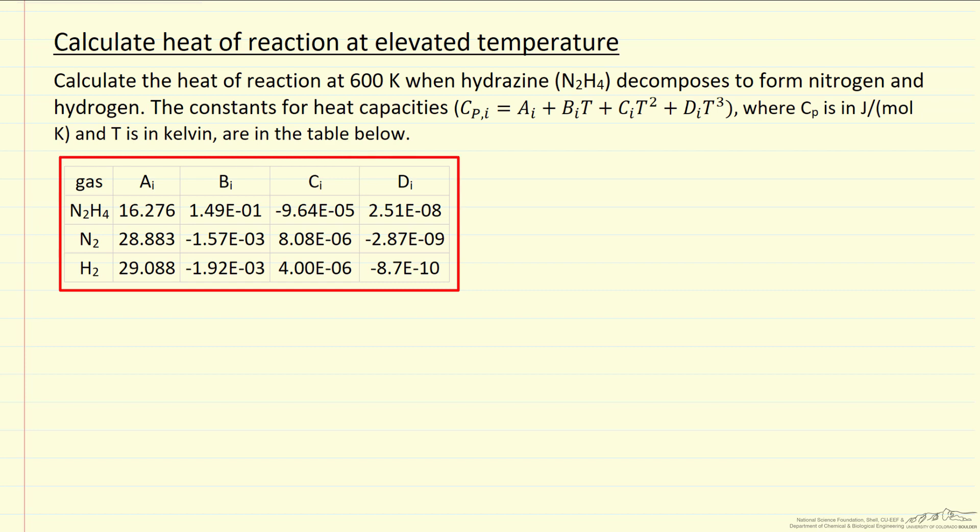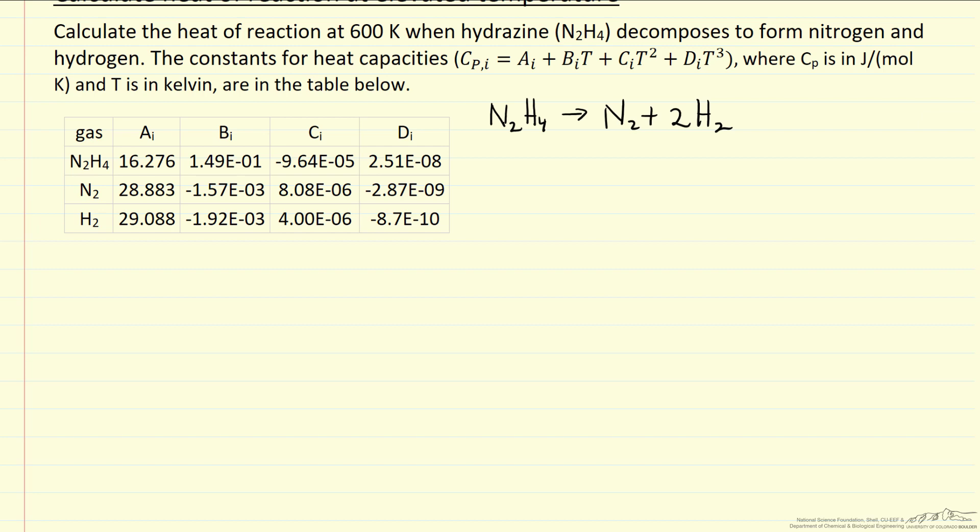The reaction that we're interested in is hydrazine reacting to nitrogen and to hydrogens. So the idea is we want to start with hydrazine at 600 Kelvin reacted to nitrogen and hydrogen at 600 Kelvin, and the heat of reaction at 600 is what we're interested in calculating.